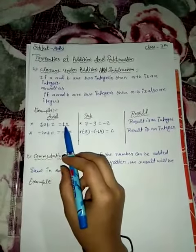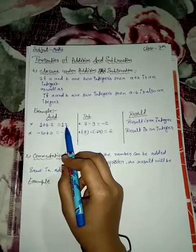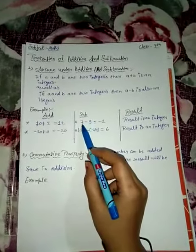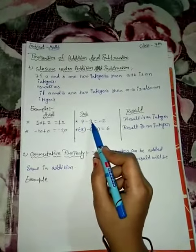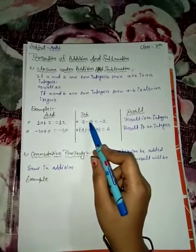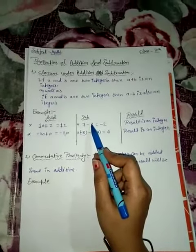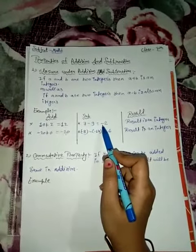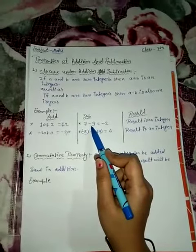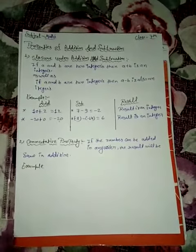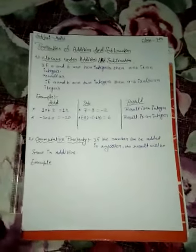When we add two numbers, the result will be an integer. Now let's discuss subtraction. 7 minus 9: when we subtract, plus minus becomes minus, and 9 is the bigger digit, so the sign is minus. 9 minus 7 equals 2, so the result is minus 2, which is an integer.